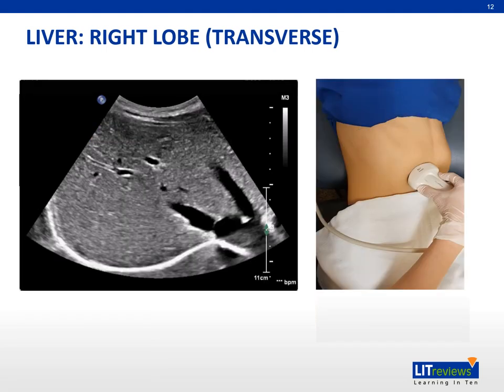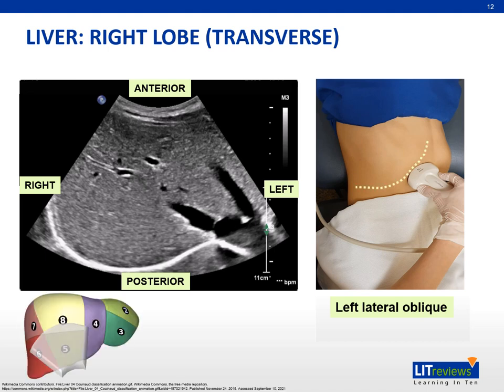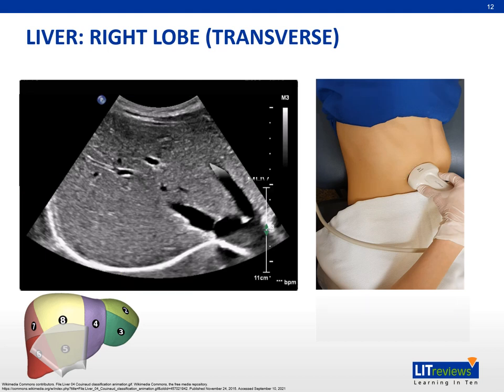Turn the patient to the left lateral oblique position. To achieve the transverse plane of the right hepatic lobe, align the transducer to the right costal margin. The amount of cranial angulation needed differs from patient to patient. In this plane, we can see the middle and right hepatic veins draining into the IVC.